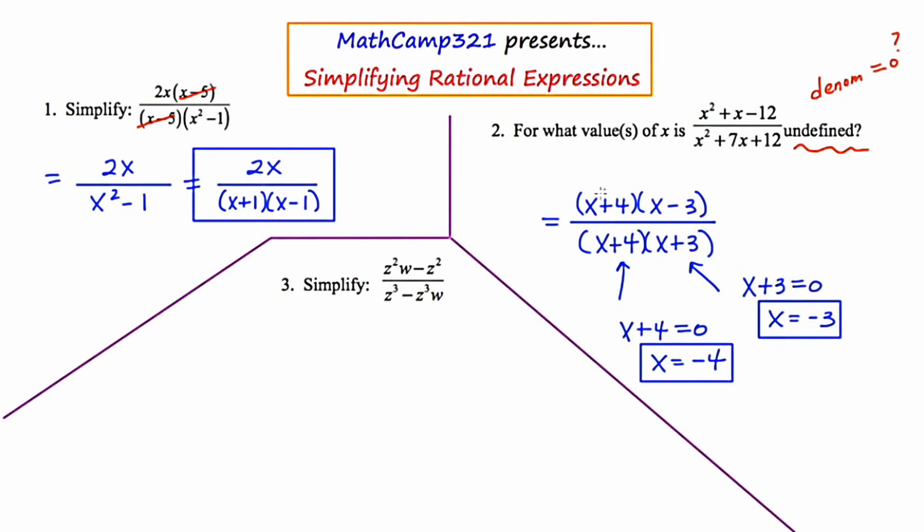Now what happens in a question like this is students get so excited at the prospect of canceling out that they go ahead and they cancel out the x plus 4s. And when you do that, you're left with a new fraction, x minus 3 over x plus 3. And this fraction here, that is the simplified fraction.